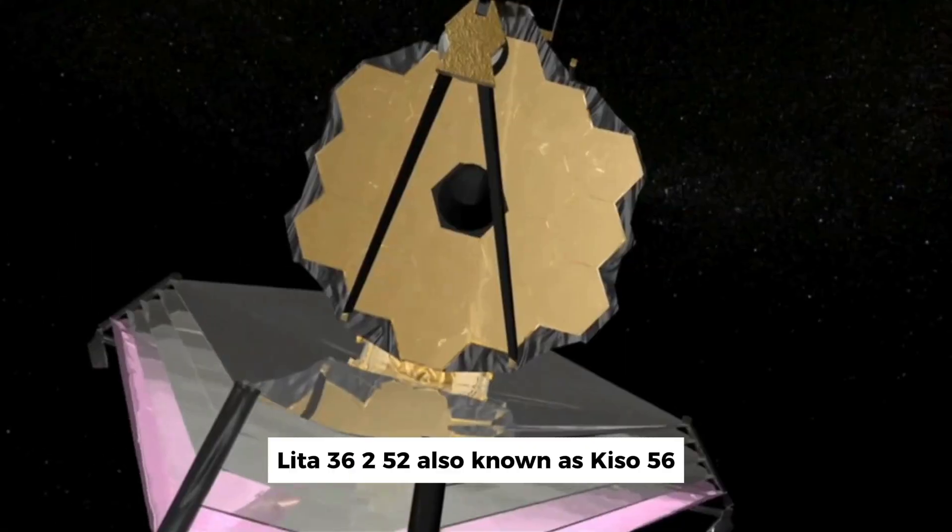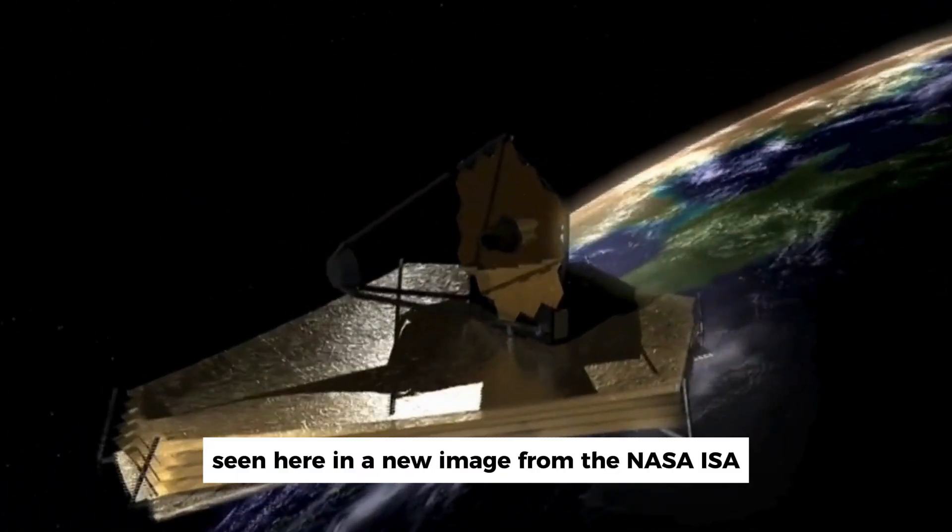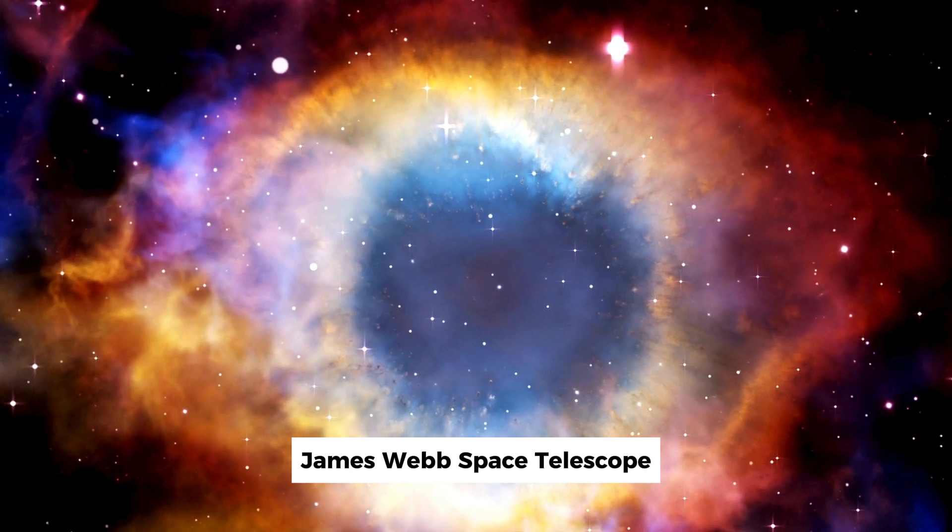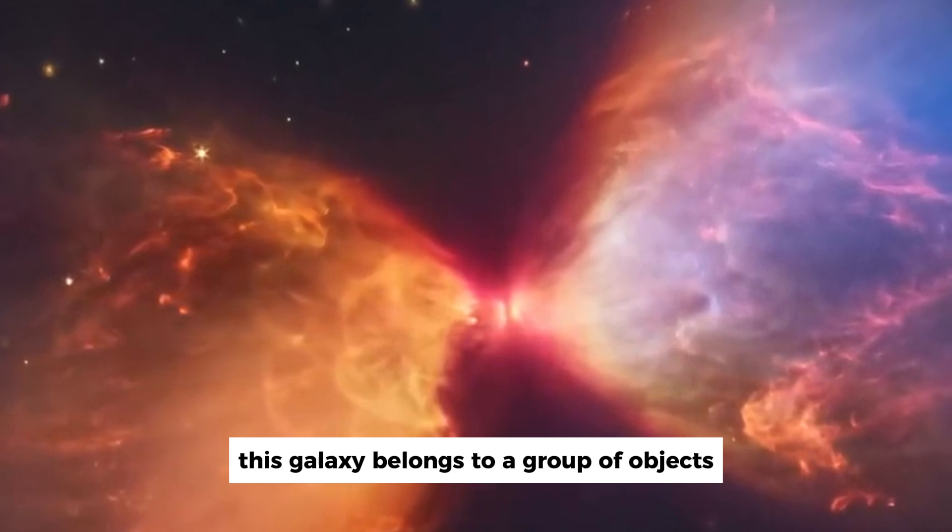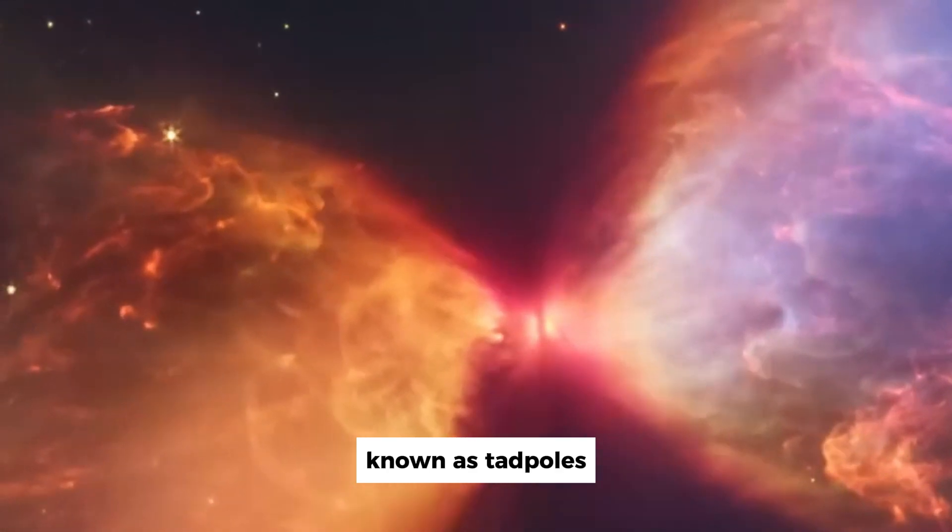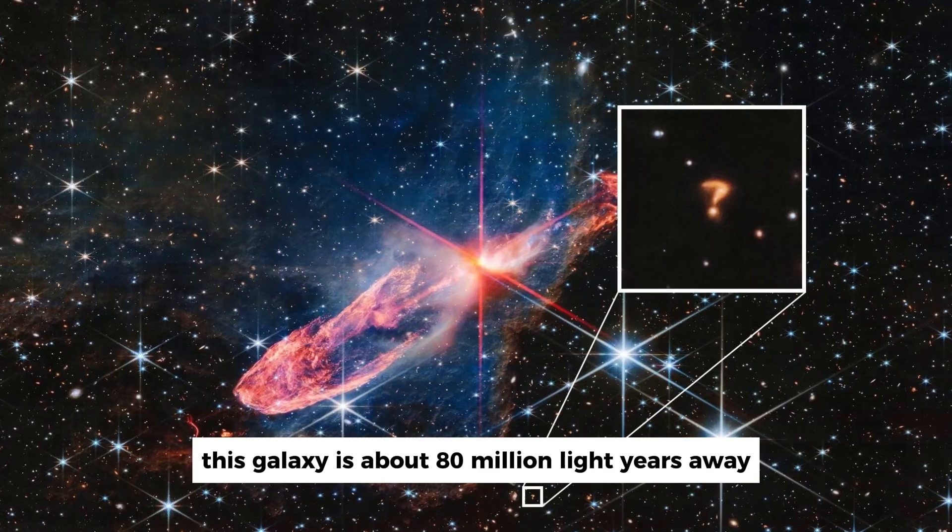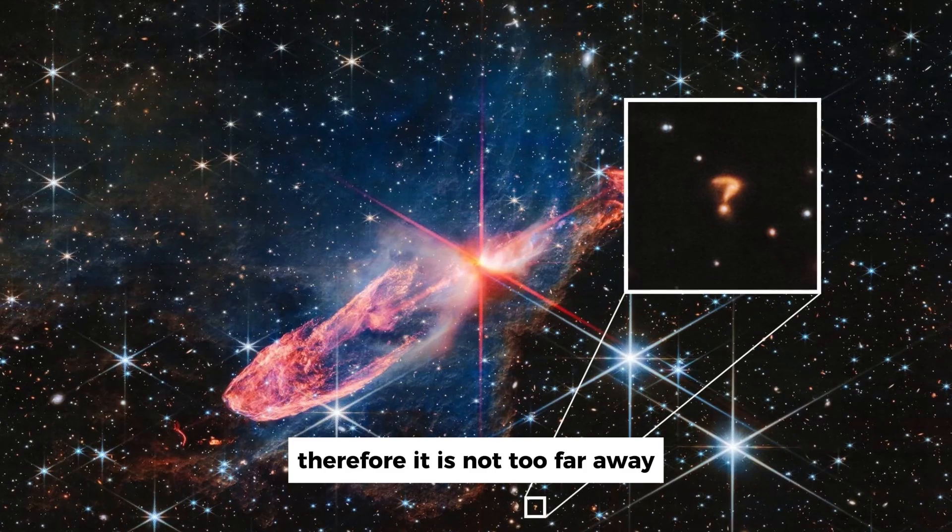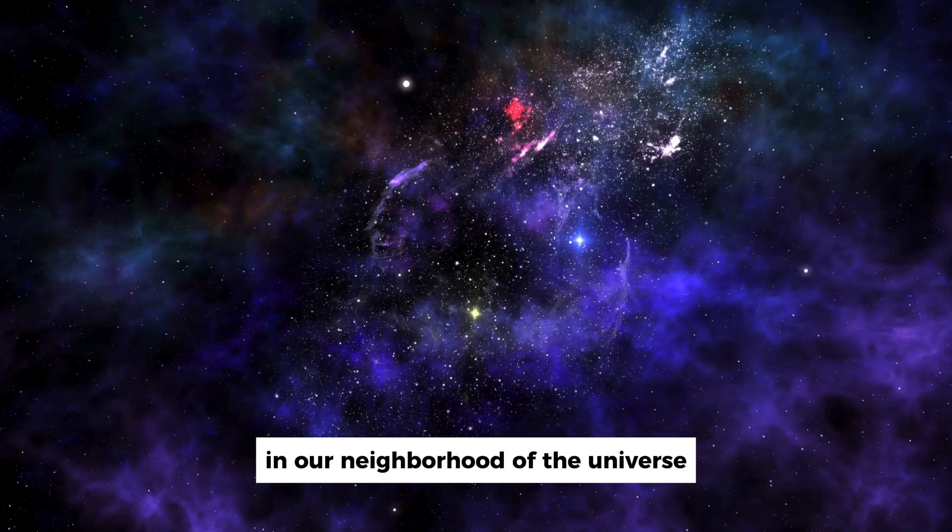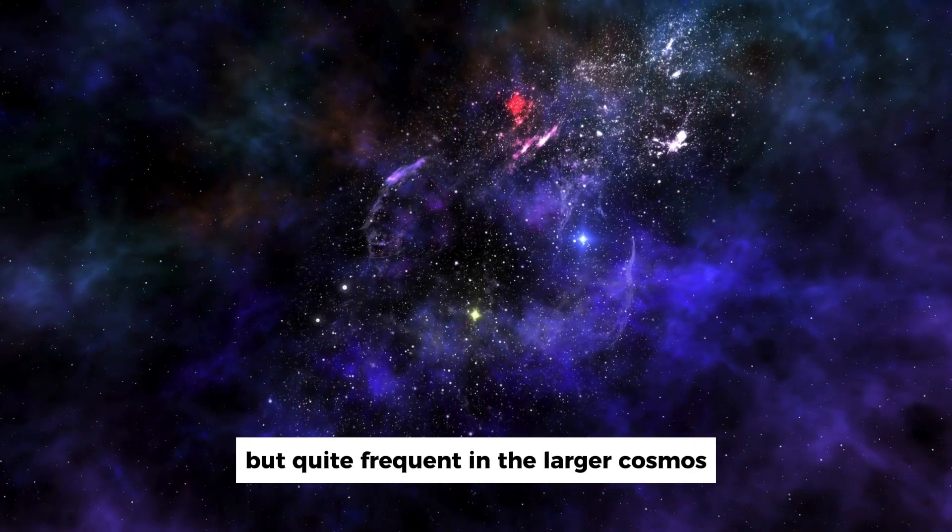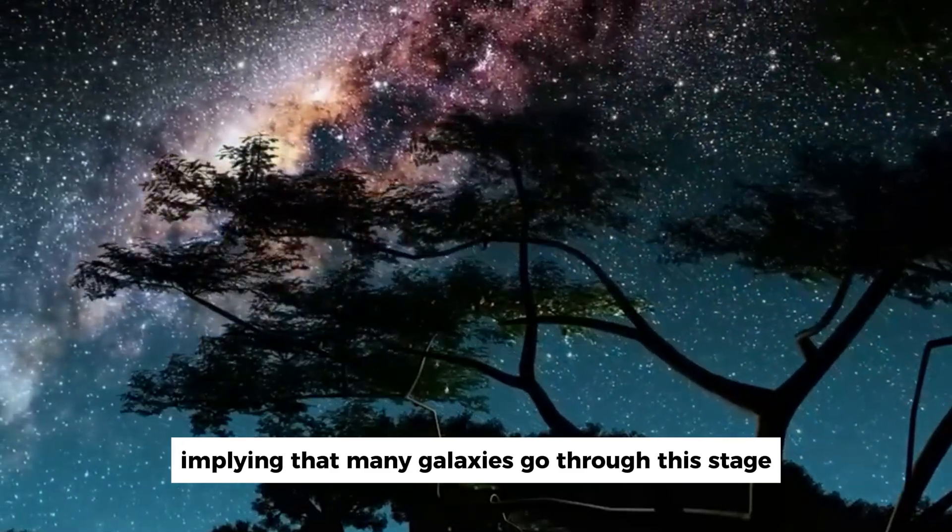LEDA 36252, also known as KISO 5649, is a little galaxy seen here in a new image from the NASA ESA James Webb Space Telescope. Because of its bright head and extended tail, this galaxy belongs to a group of objects known as tadpoles. This galaxy is about 80 million light years away. Tadpole galaxies are unusual in our neighborhood of the universe, but quite frequent in the larger cosmos, implying that many galaxies go through this stage in their evolution.